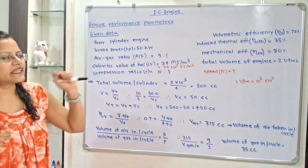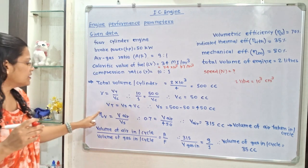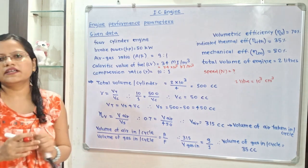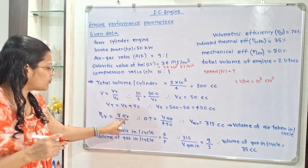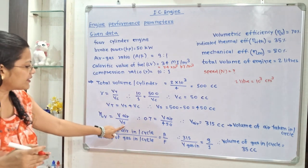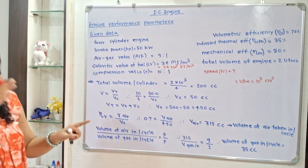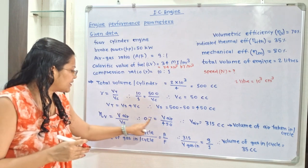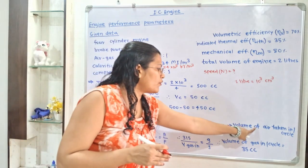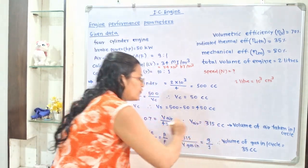Next, volumetric efficiency is given as 70%. Volumetric efficiency is defined as the volume of air taken in per cycle divided by the swept volume. Putting the values: 0.7 = V_air / 450, so the volume of air taken in per cycle V_air = 0.7 × 450 = 350 cc.